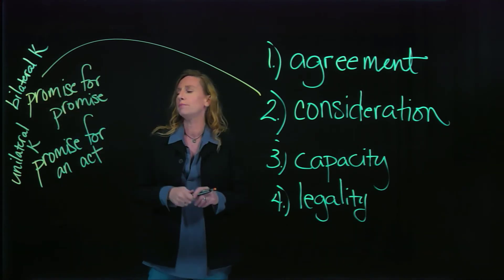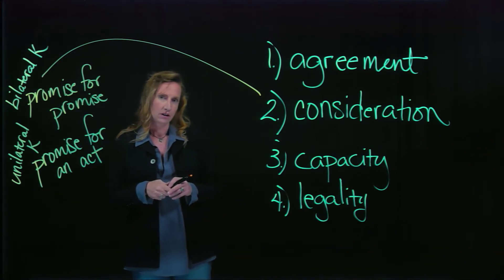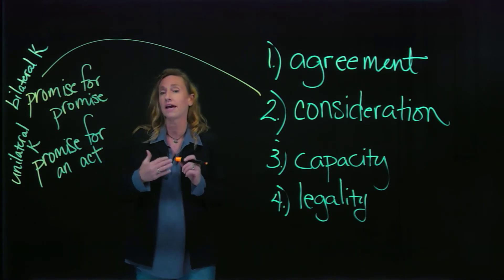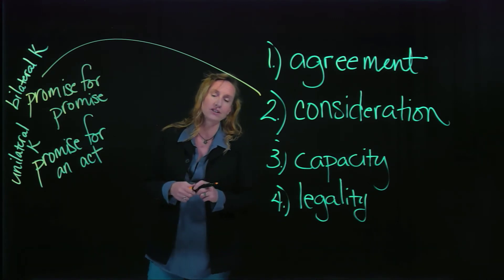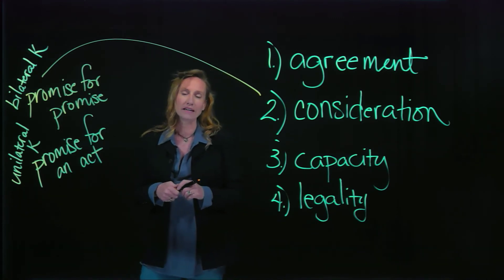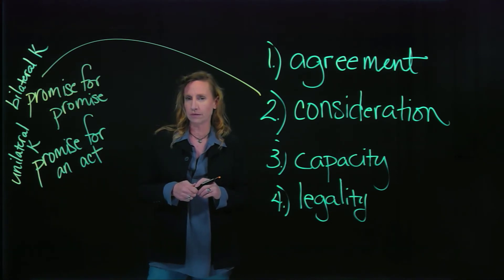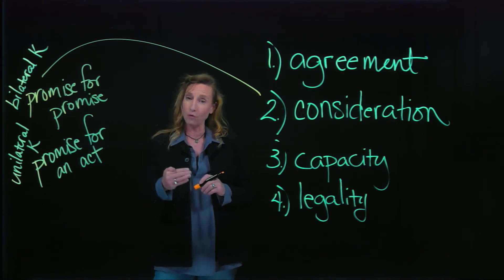So what does a promise for an act look like? Commonly, it's a reward contract. I will pay $1,000 to whomever finds my dog and returns him to my house. If you knock on my door and say I promised to find your dog, I don't owe you money. We don't have a contract, even though you promised to do something.